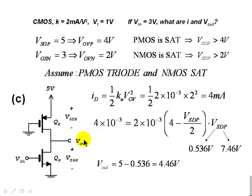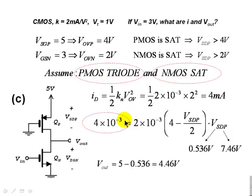We now have all the answers for Part C: the P transistor is in triode mode, the N transistor is in saturation mode, the current through both is 4 mA, and the output voltage is 4.46 volts. With that, we have completed the question.